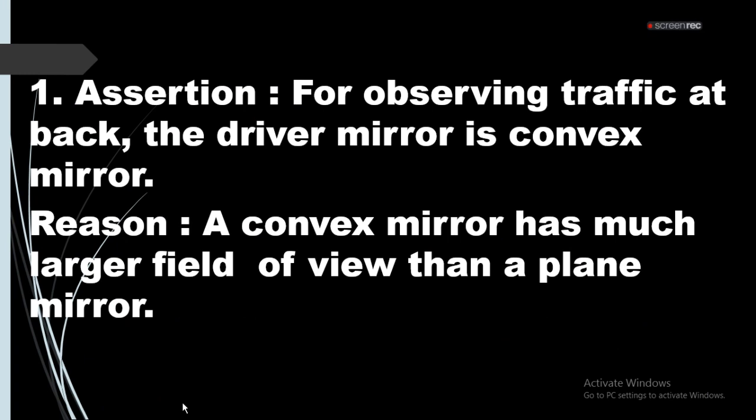First question. Assertion: For observing traffic at back, the driver mirror is a convex mirror. So to observe traffic, we know that convex mirror is used.